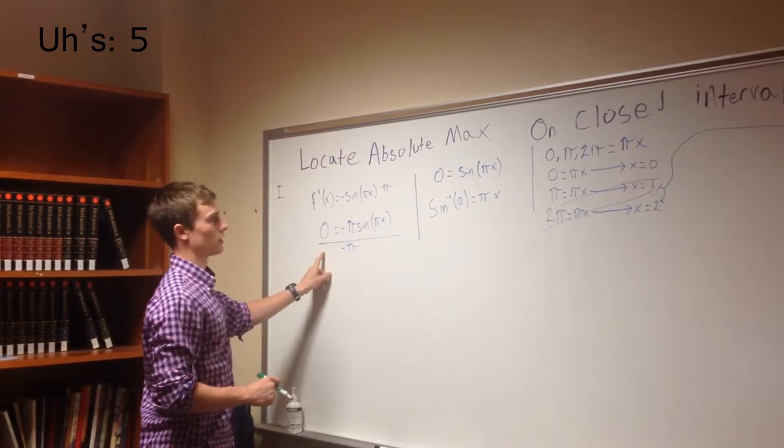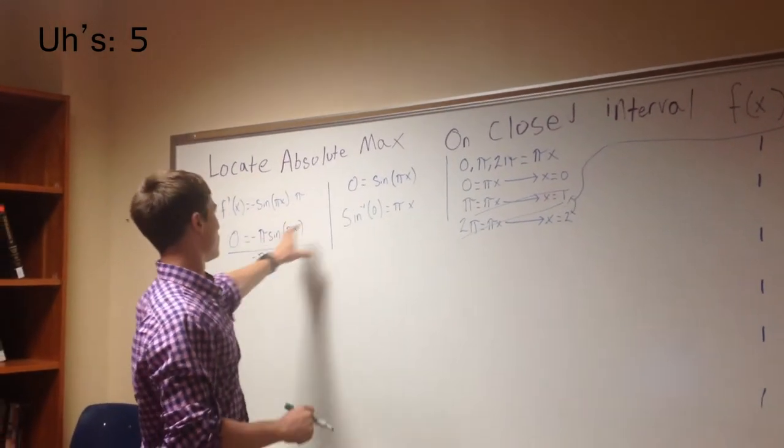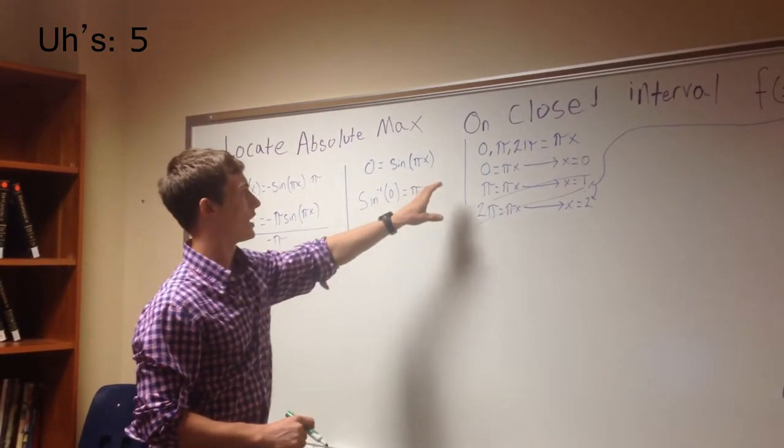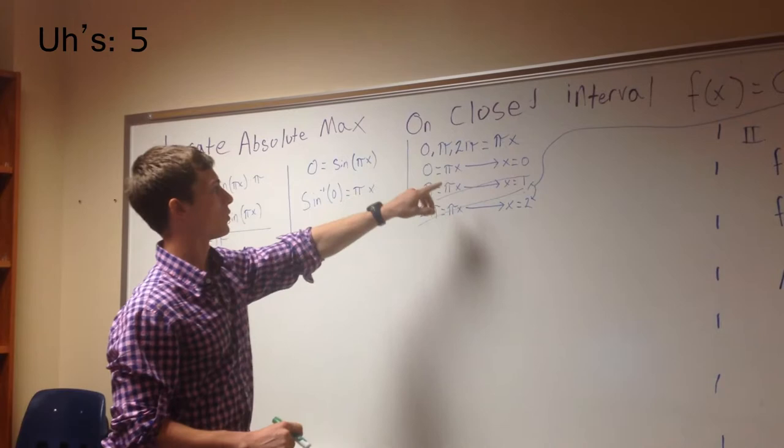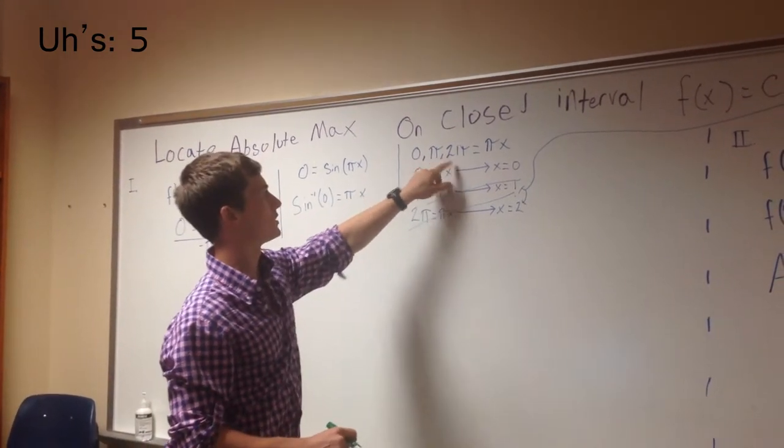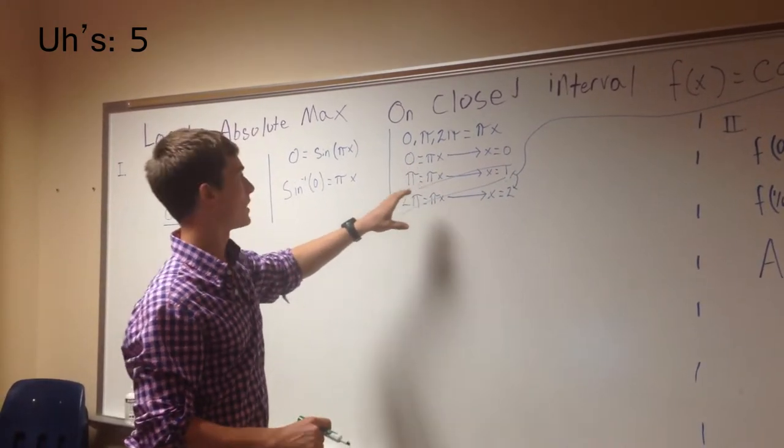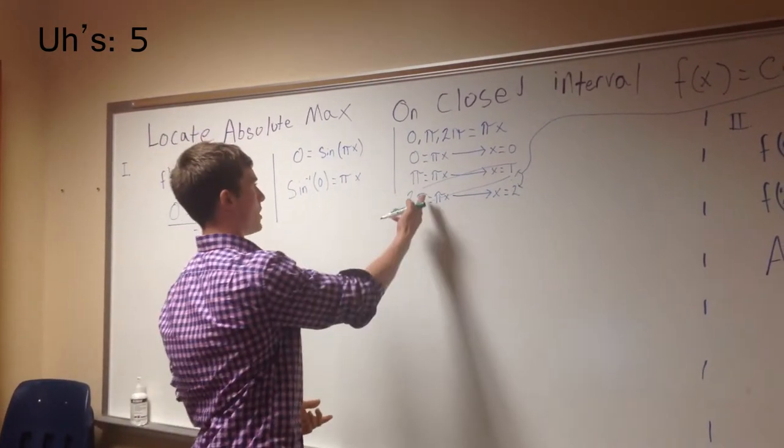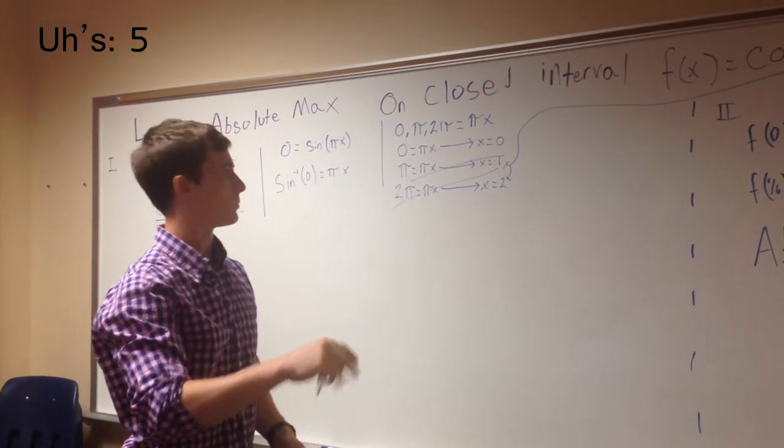Then, we're going to set it equal to zero, and we're going to find the critical points. So, that's what all of this is. Then, from there, we're going to figure out which of these points are outside of the closed interval, if there are any. It turns out that pi and two pi are both outside of one-sixth by a pretty long shot.